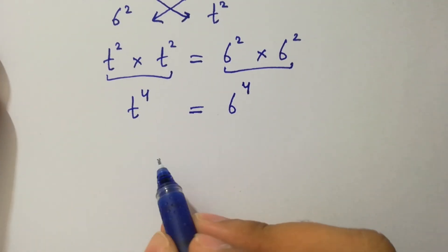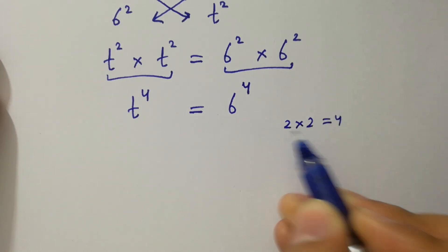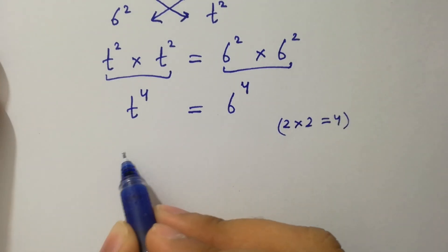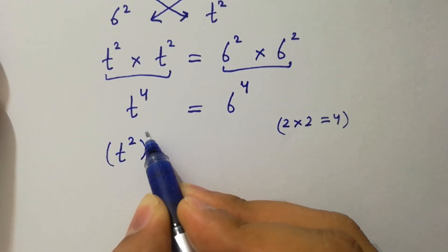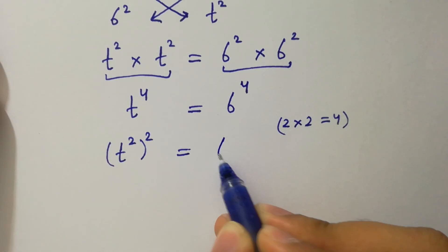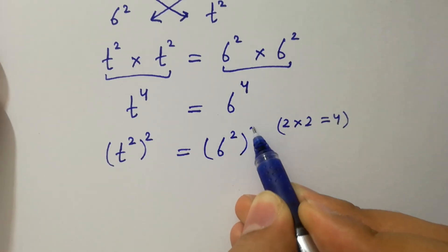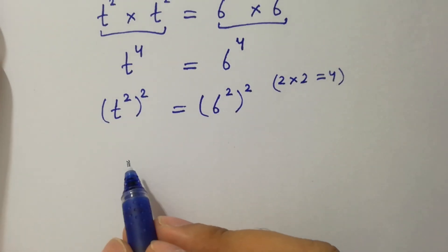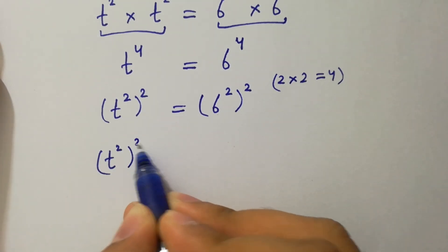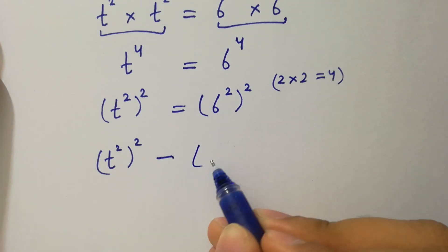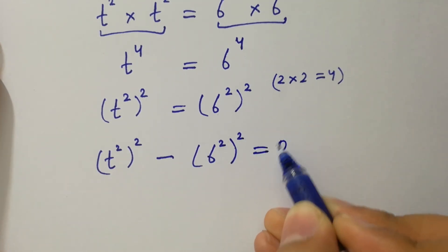As 2 times 2 is 4, we can write it as t to the power 2, to the whole power 2, equals 6 to the power 2, to the whole power 2. So it can be written as (t²)² minus (6²)² equals 0.